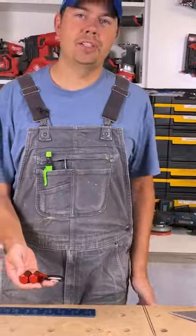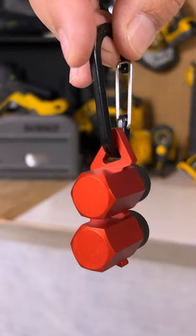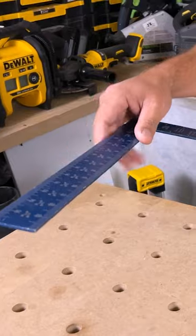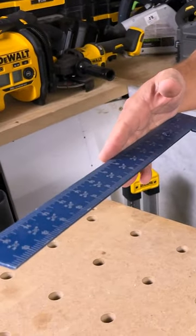These I call stair gauges. They're so important to have when you're building stringers because you need to be able to have a consistent positive stop on your square every single time.